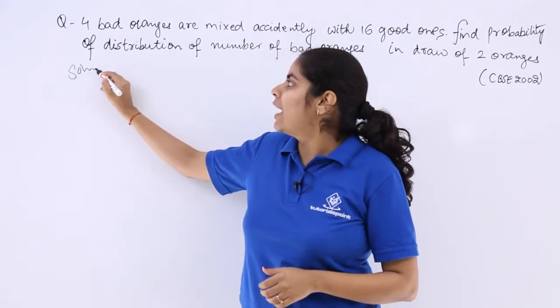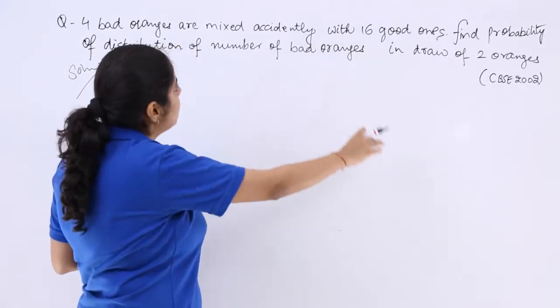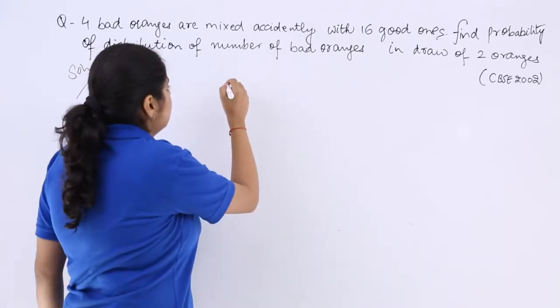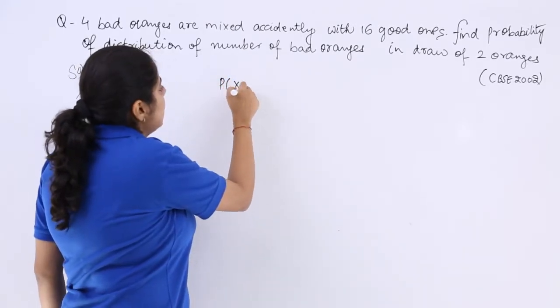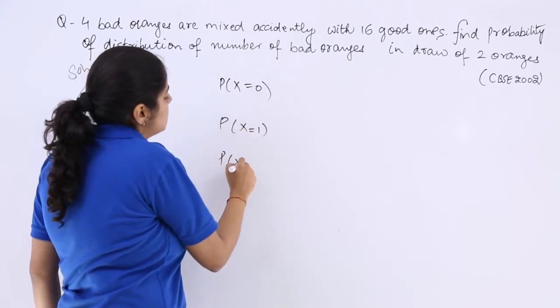I'll write solution and see. If there are bad oranges which are how many in number, only 4, and you are going to draw 2 oranges, let's see how it will be done. So either it will be P(X=0) or P(X=1) or P(X=2).